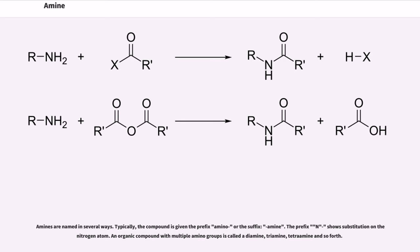Amines are named in several ways. Typically, the compound is given the prefix amino or the suffix amine. The prefix N shows substitution on the nitrogen atom. An organic compound with multiple amino groups is called a diamine, triamine, tetramine and so forth.